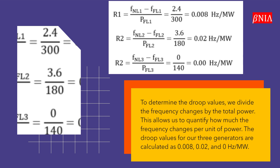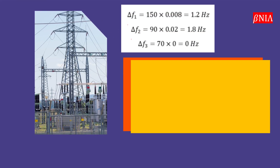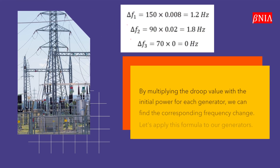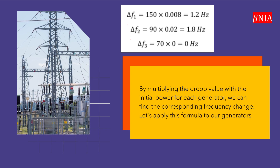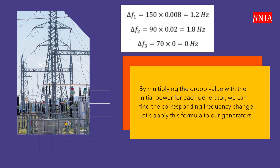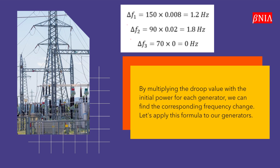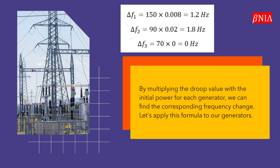The droop values for our three generators are calculated as 0.008, 0.02, and 0 Hz per MW. By multiplying the droop value with the initial power for each generator, we can find the corresponding frequency change. Let's apply this formula to our generators.